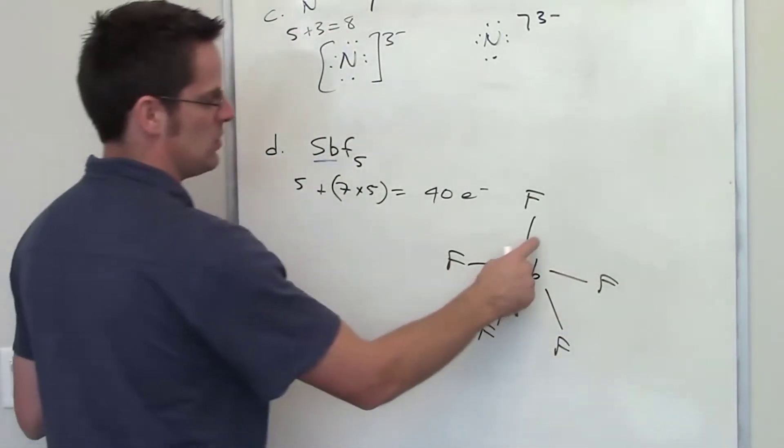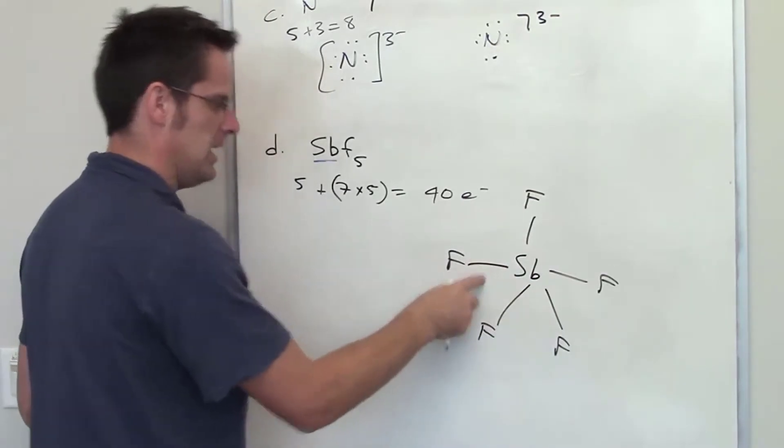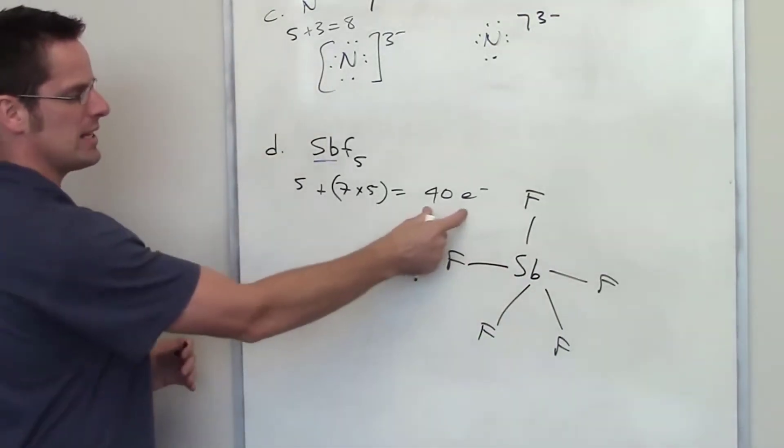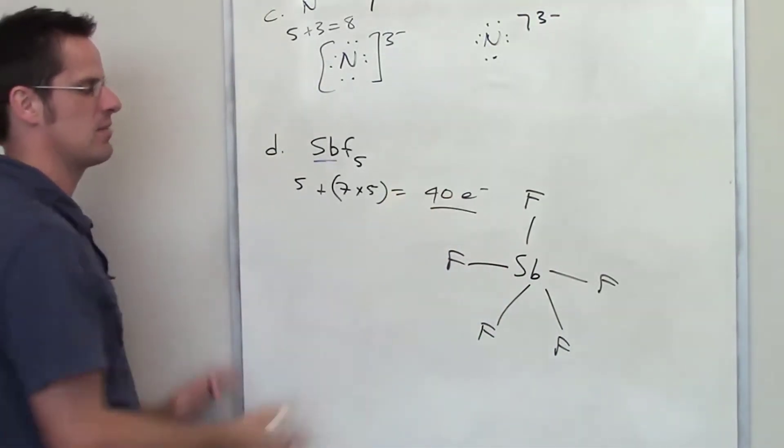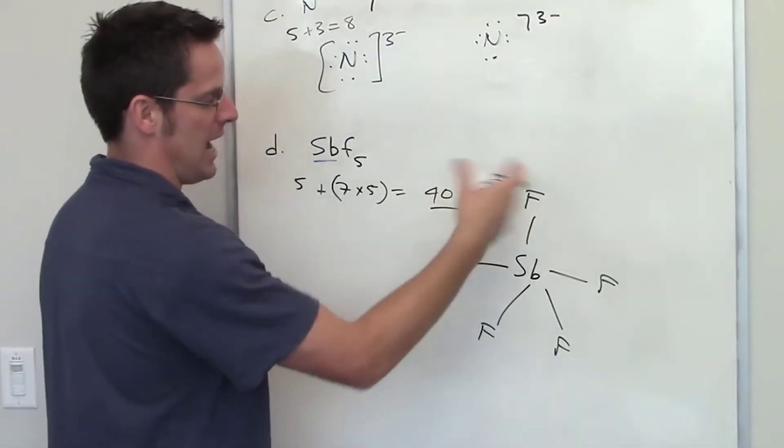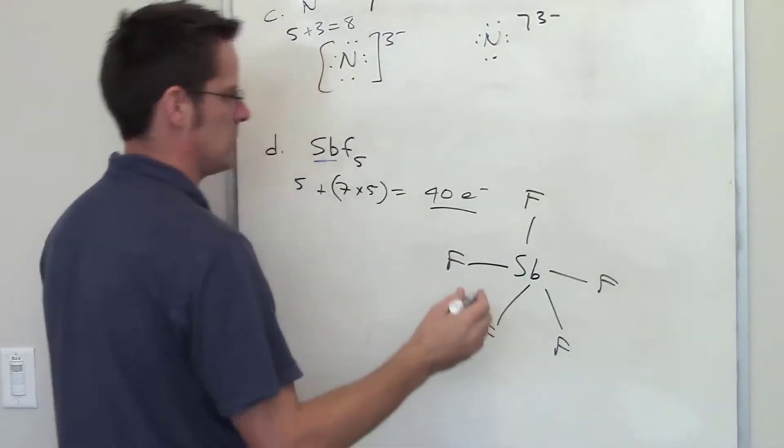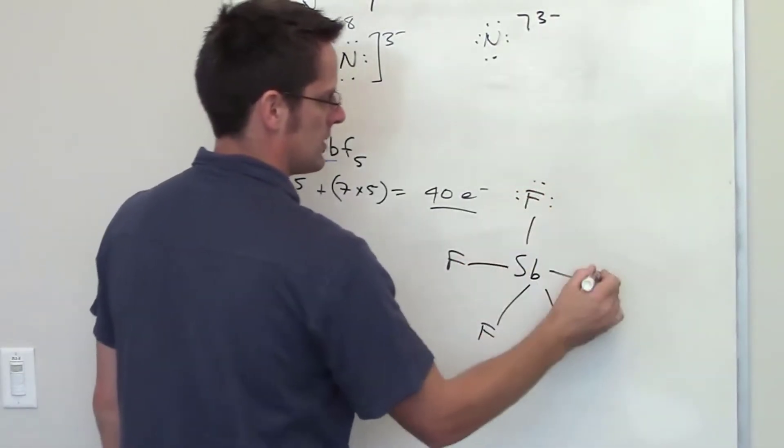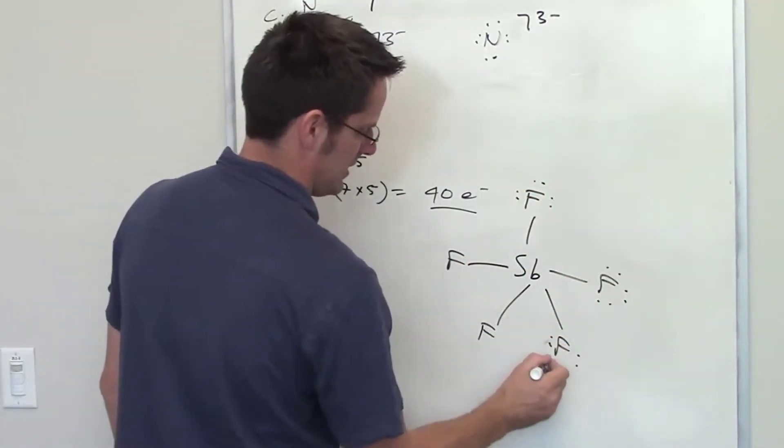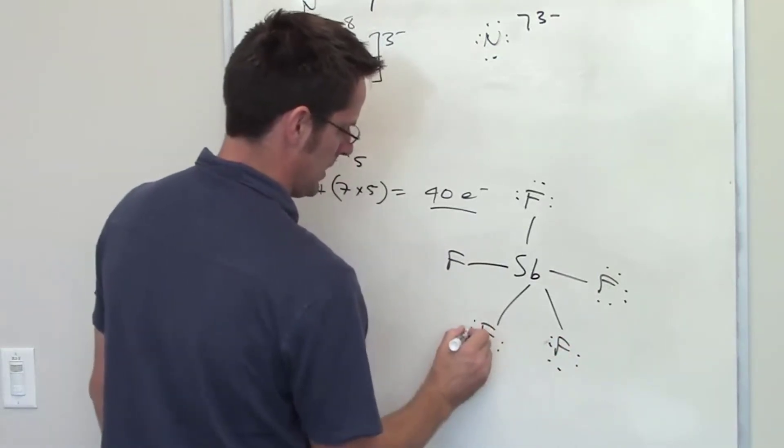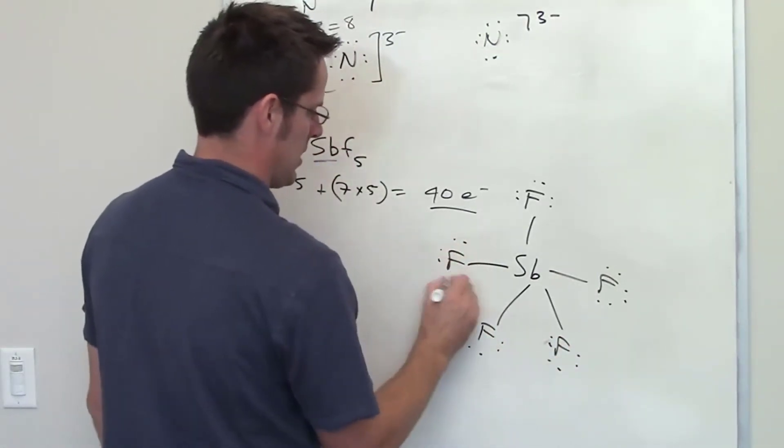And what I've done here is I've used up now 2, 4, 6, 8, 10 valence electrons. I have 30 left to play with, because I've just taken away 10 from my 40. I'm going to throw all of the extra electrons on my fluorines until I run out and see what it looks like. So I've got 2, 4, 6, 8, 10, 12, 14, 16, 18, 20, 22, 24, 26, 28, 30.